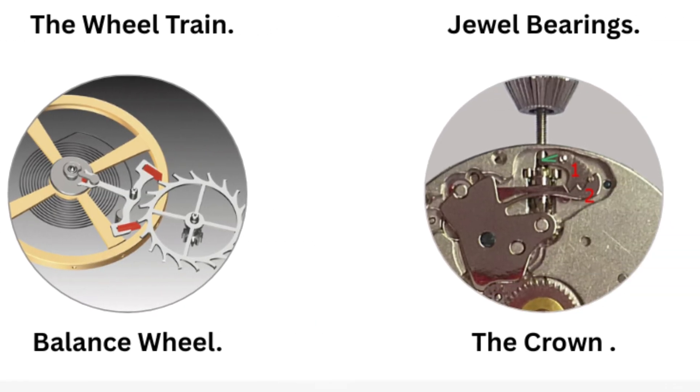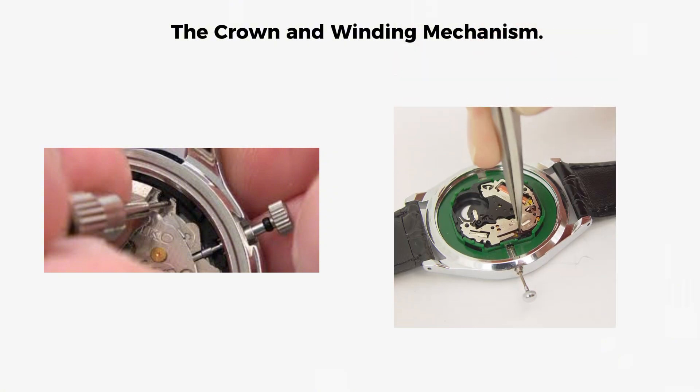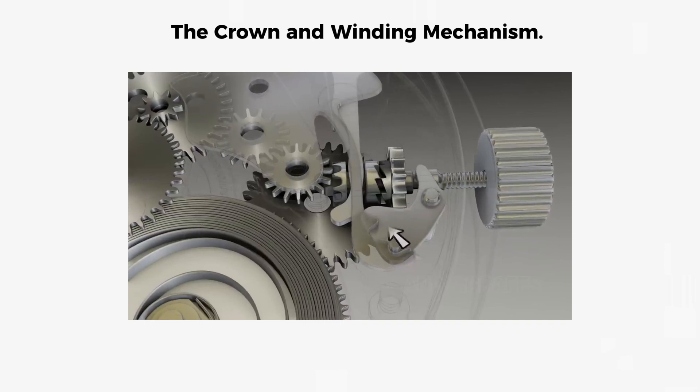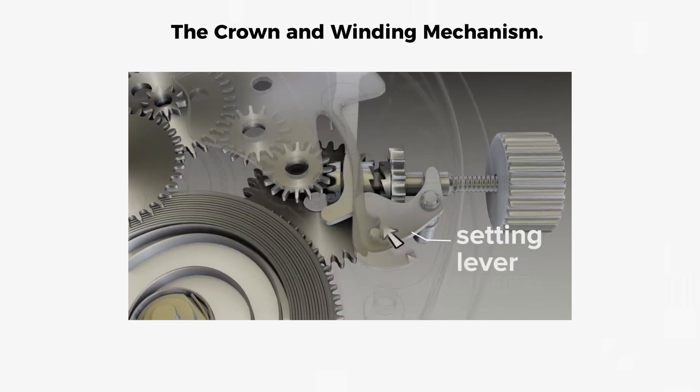The crown and winding mechanism. The crown is the small knob on the side of the watch that controls both winding and time setting. When pushed in, the crown is in winding mode. When pulled out, it switches to time setting mode.